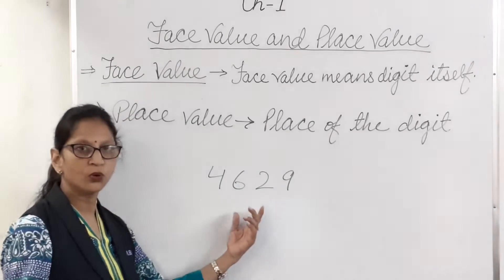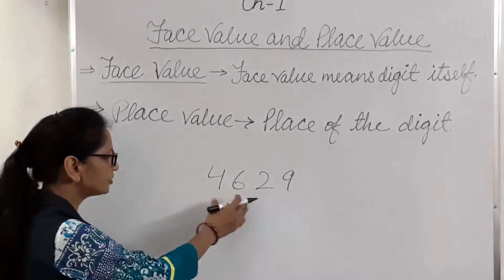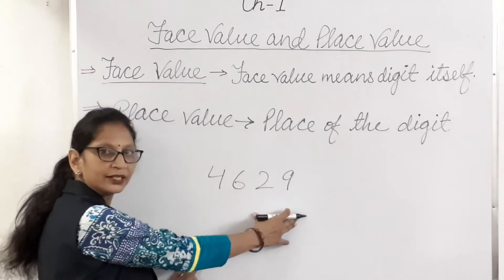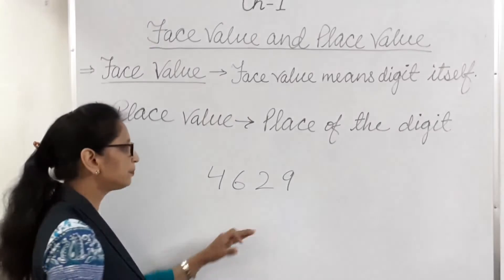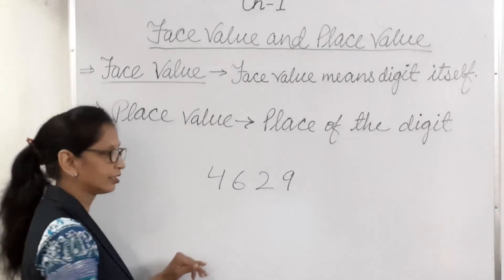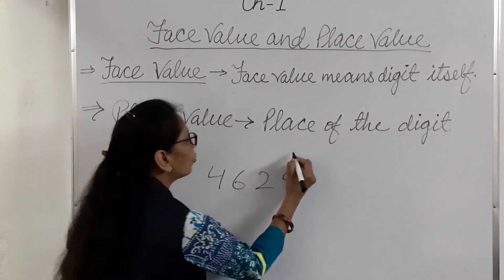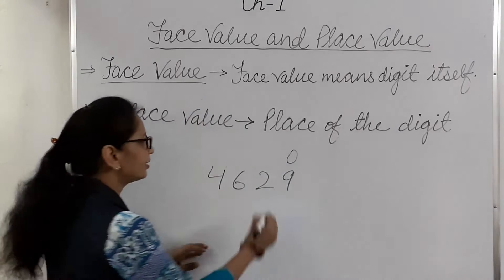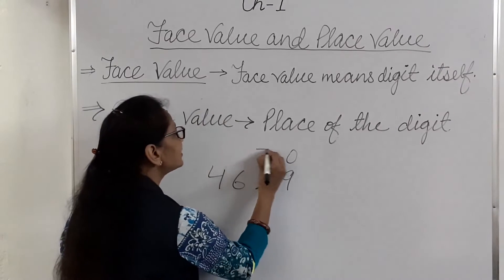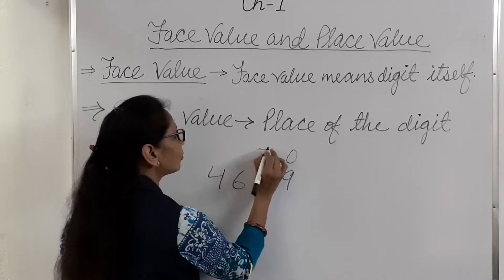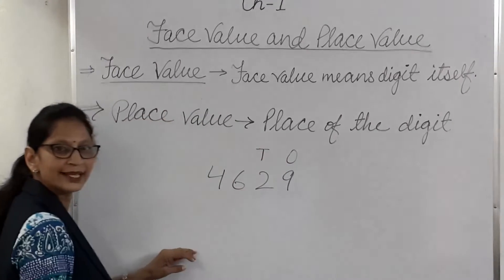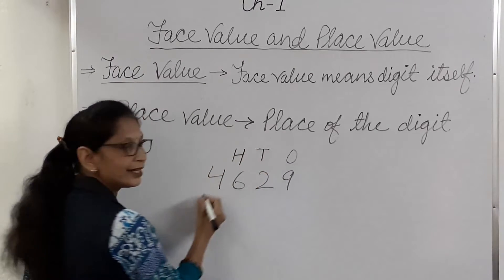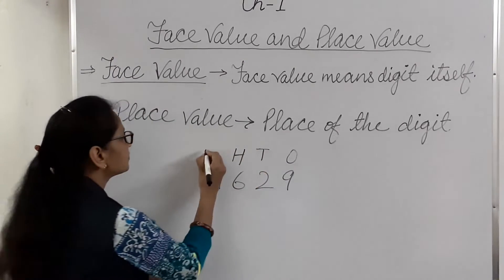You know what a place is. Suppose we have the number 4629. What is the place of each digit? 9 is in the ones place, 2 is in the tens place, 6 is in the hundreds place, and 4 is in the thousands place.